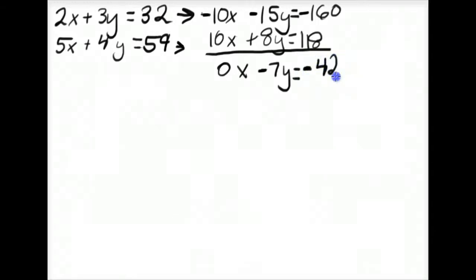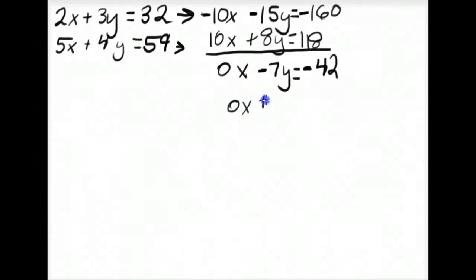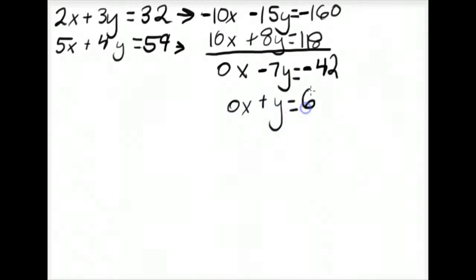Dividing each term by negative 7, we get 0x plus y equals 6. So this is just y equals 6, but I'm leaving the 0x there so you can see how the system works using the matrices.